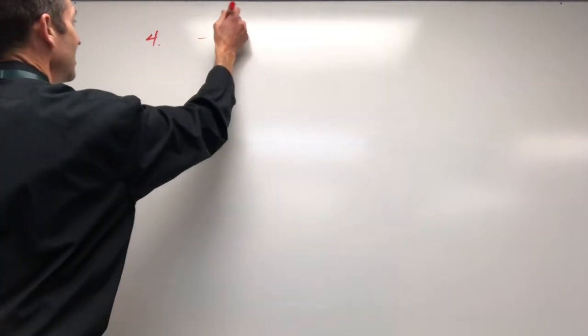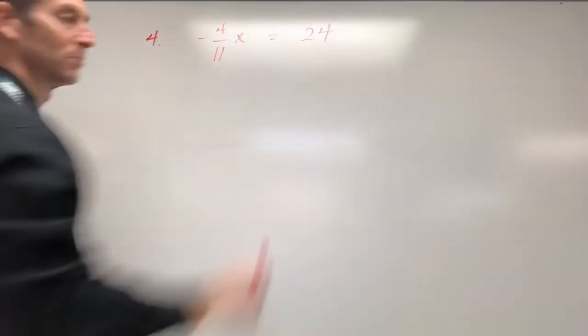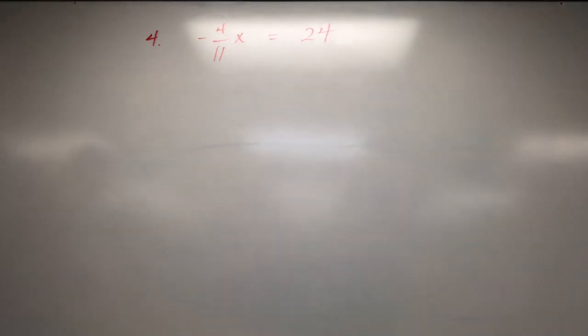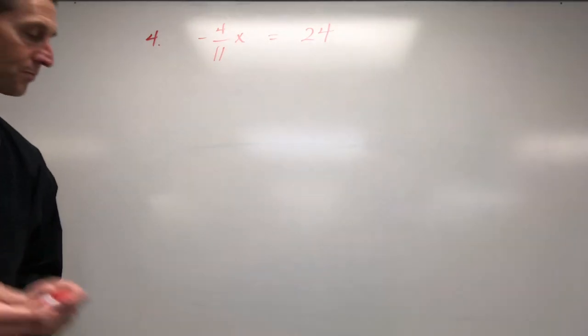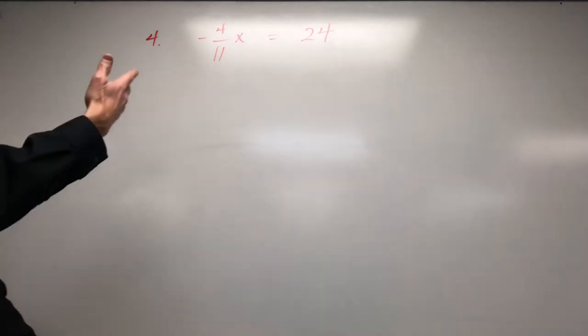So let's do one of these. Maybe throw in a negative sign with us. Negative 4 over 11 x equals—I think I have 24 written there. And undo. Okay, so you walk up to this problem and you do not like the 4 over 11. You certainly don't like that it's negative.